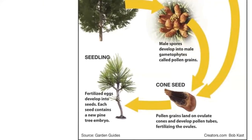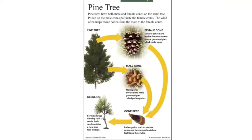Fertilized eggs develop into seeds. Each seed contains a new conifer embryo. Then the seeds either drop directly below the tree or get blown away by the wind once the scales open.